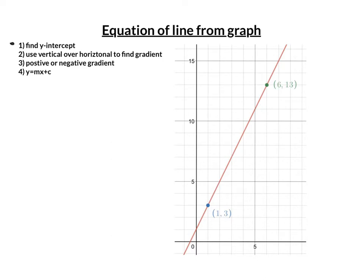My first step here is to find the y-intercept. The y-intercept is where it crosses the y-axis, which is here at (0, 1). So the c value in y = mx + c is 1.